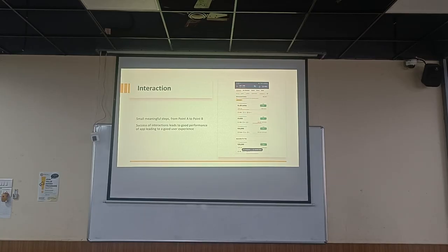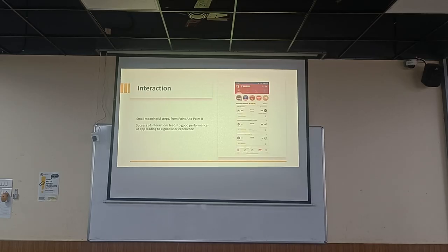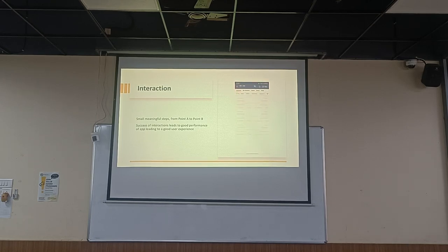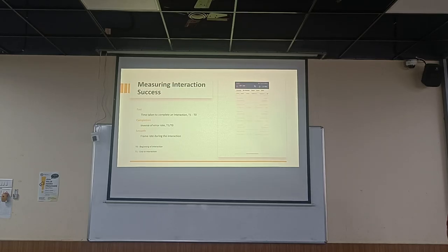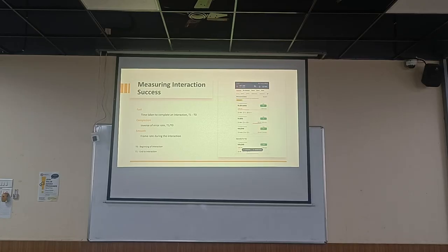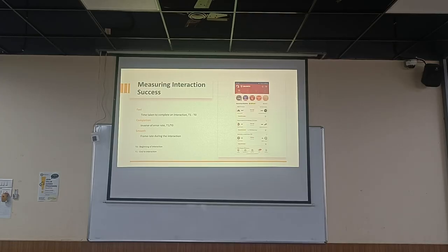How do I define the success of these interactions? Success of any interaction can be computed by three properties: one, how fast the interaction took place; two, whether the user was able to complete the interaction or not; and three, how smooth the interaction was.